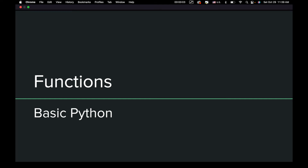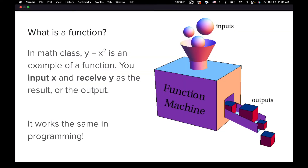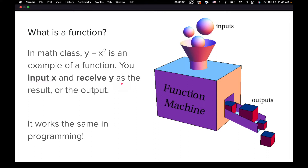Today we're going to start with a concept called functions, which in my opinion is fairly simple, but a lot of beginners of Python have trouble with it. Basically, how a function works is we input something and we get something out in return. It's very similar to a mathematical function like y equals x squared — we put in 5, 5 squared equals 25, so we get 25 as output. x is our input, y is our output. We have a concept that works the exact same in programming.